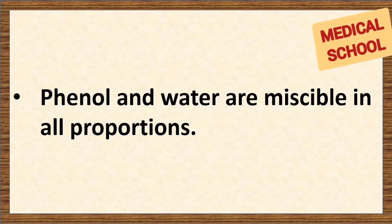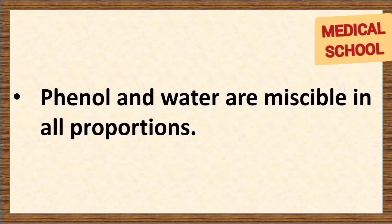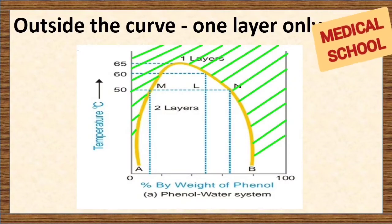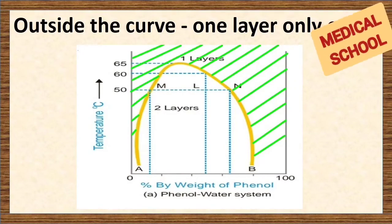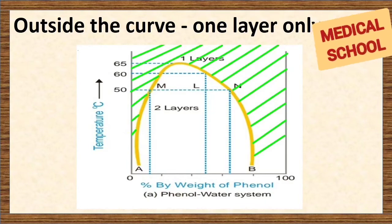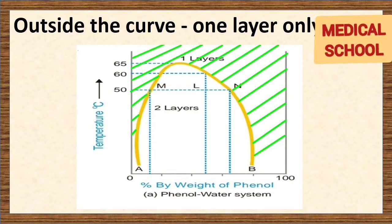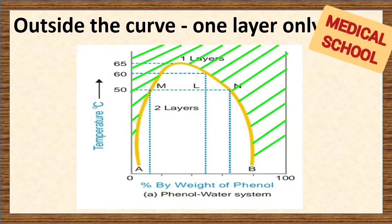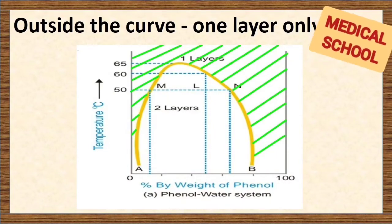At any temperature above the critical solution temperature, phenol and water are miscible in all proportions — that is, they form one single layer. Now, can you see these green lines? Outside the curve, that is the green region, there is complete homogeneity of the system — that is, one layer only exists.